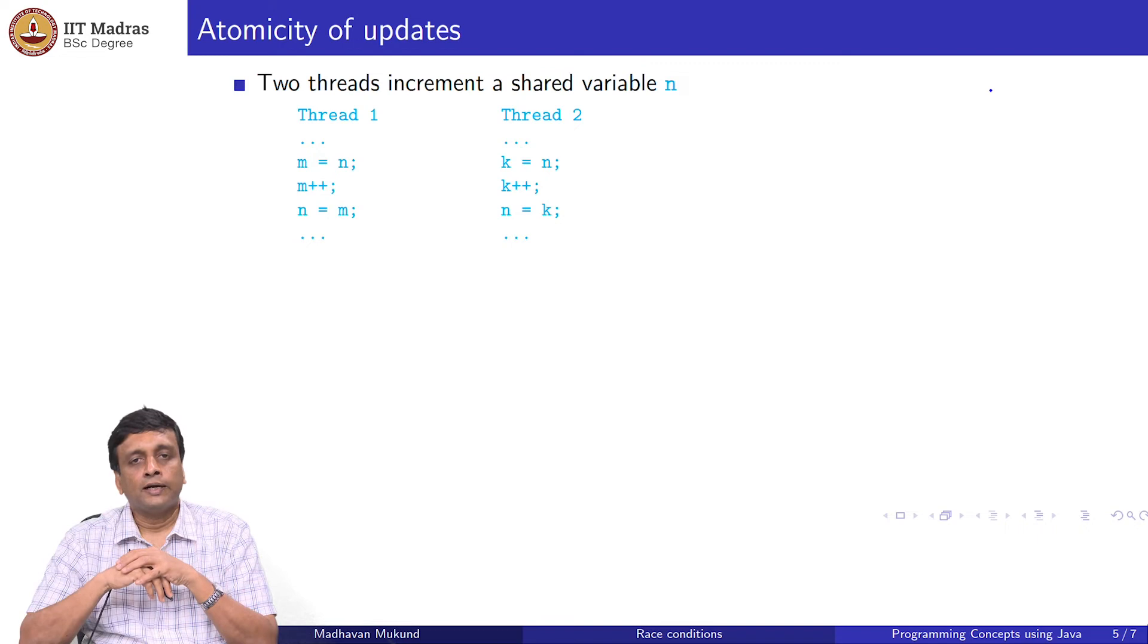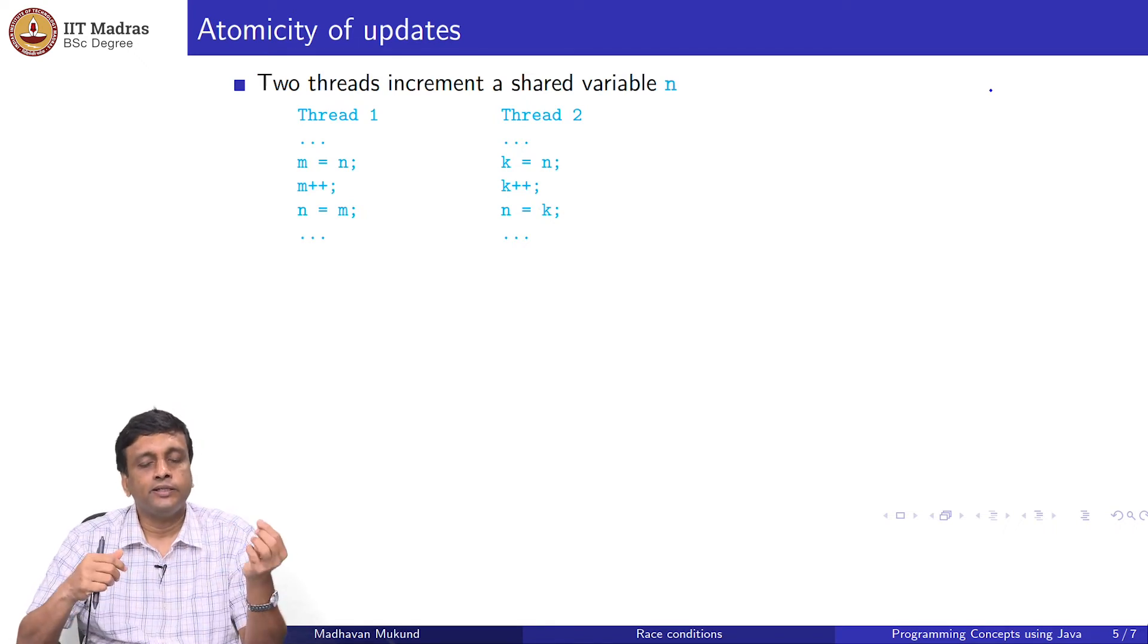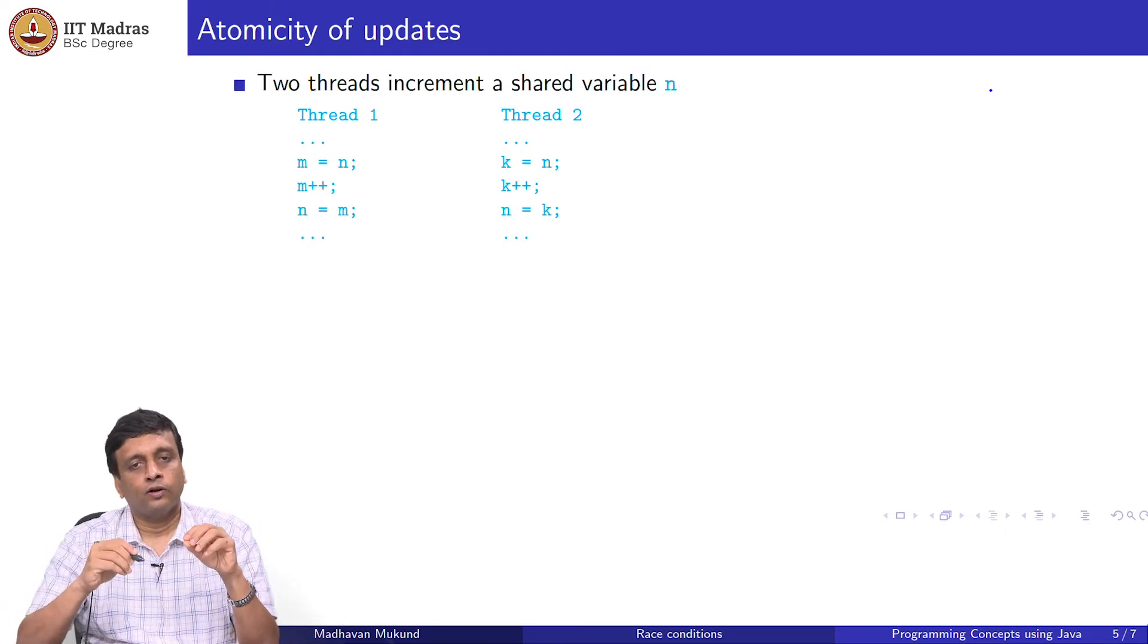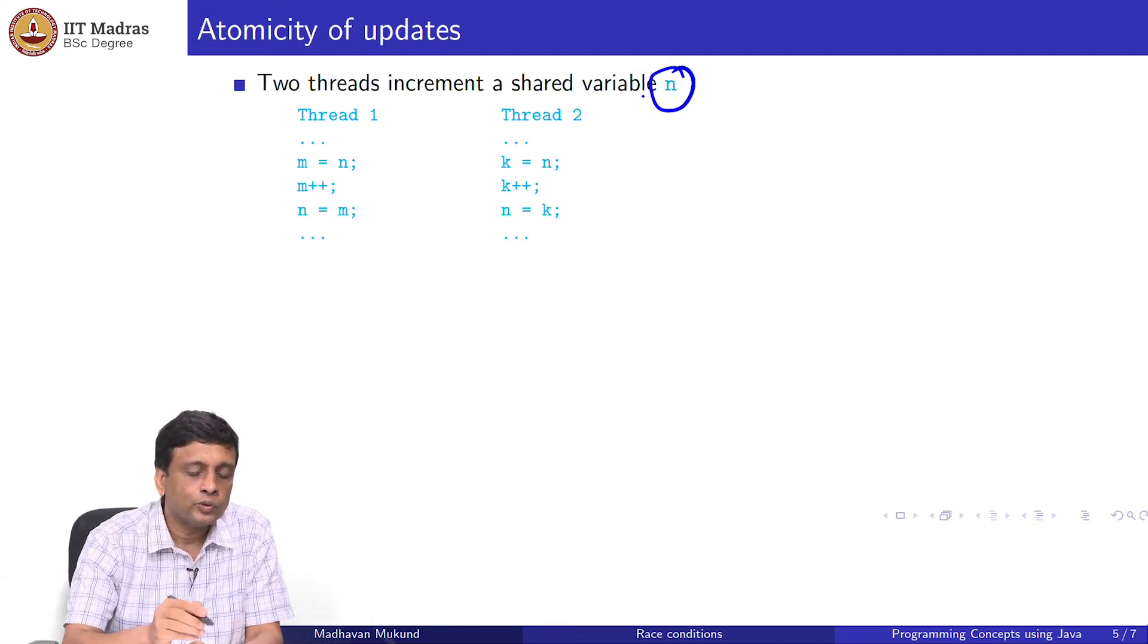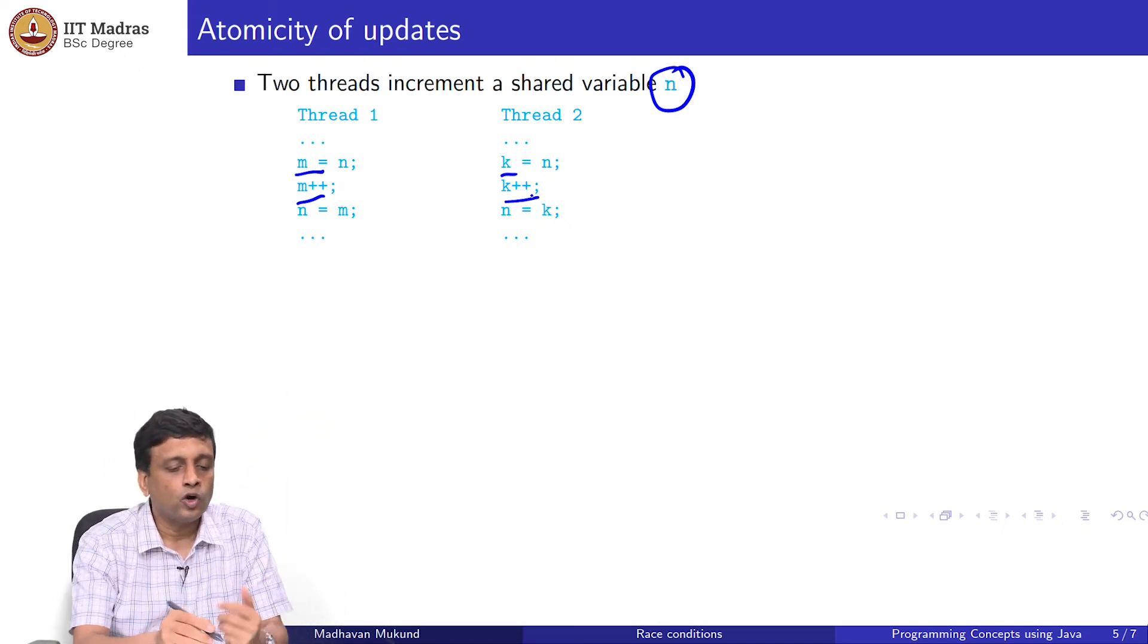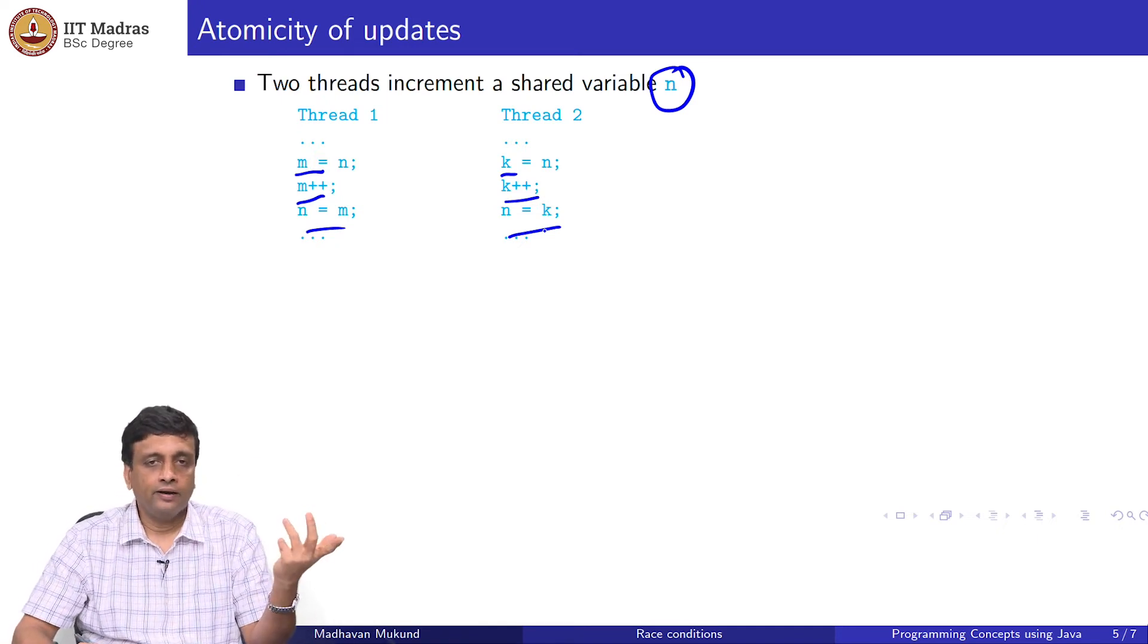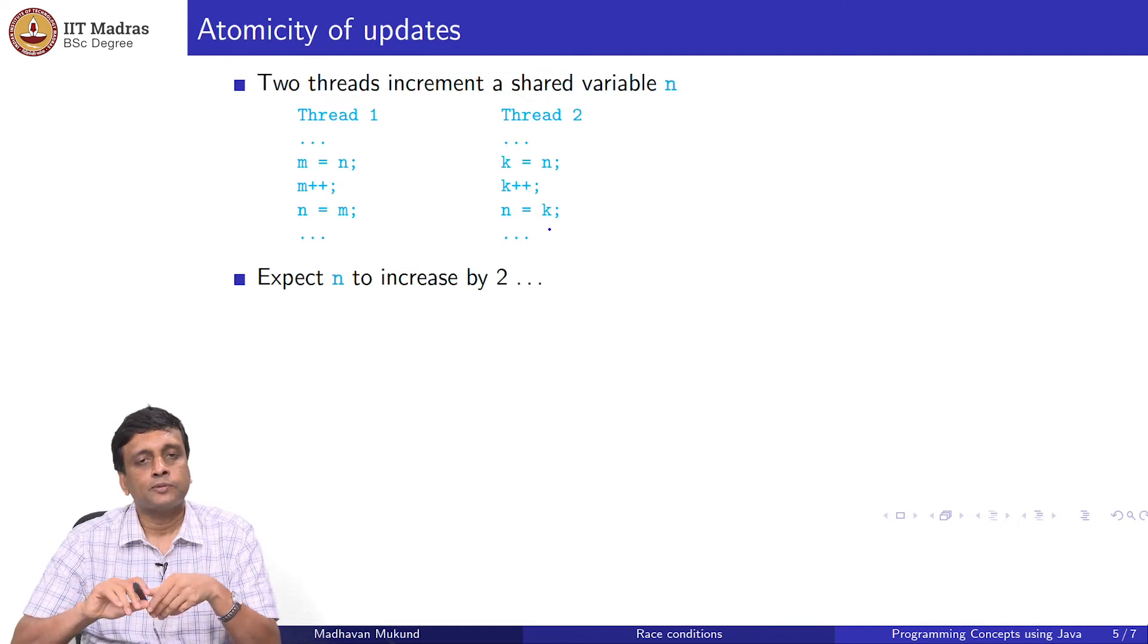That was a fairly complicated example using arrays. But let us look at a much simpler example. Supposing I just have one integer shared by two threads. This is a shared variable. I will assume they also have local variables which are not shared. Each of them will copy the shared variable n. Each copies n into its local variable m and k respectively. Then you increment the local variable. You are not touching the shared variable at all. Then you copy it back. If I start with an initial value of n say 7, then one of them will increment it to 8 and the other should increment it to 9. Logically, if this happens nicely, you would expect two increments to happen on n. We would expect n to increase by 2.